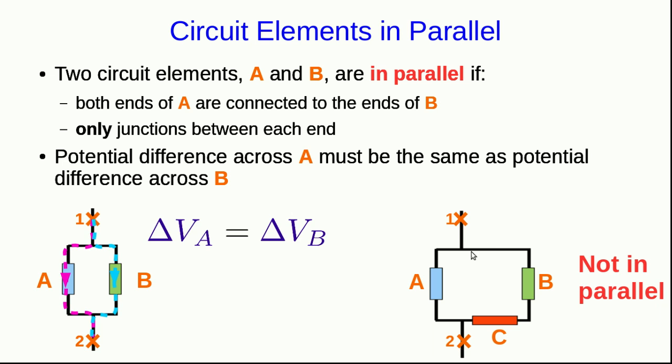But if you try the same with this set of three circuit elements, all you come to is the conclusion that the potential differences across B and C add up to the potential difference across A. And so A isn't in parallel with either B or C.